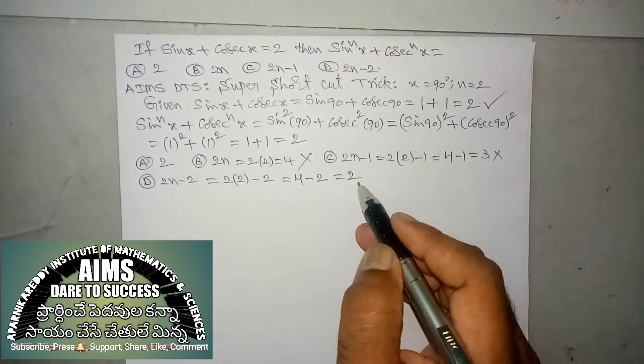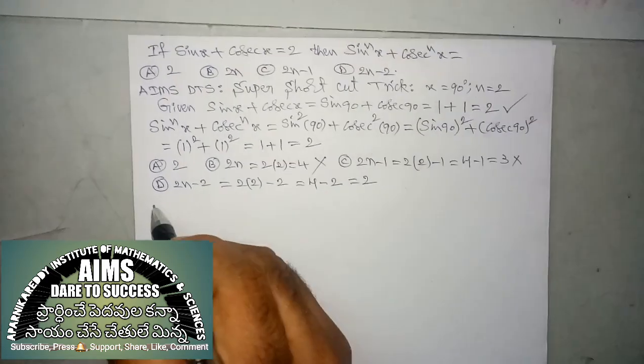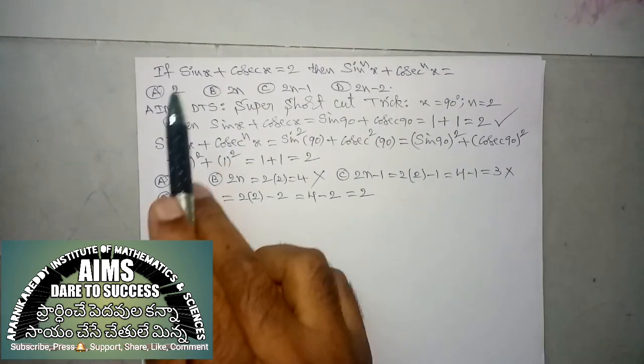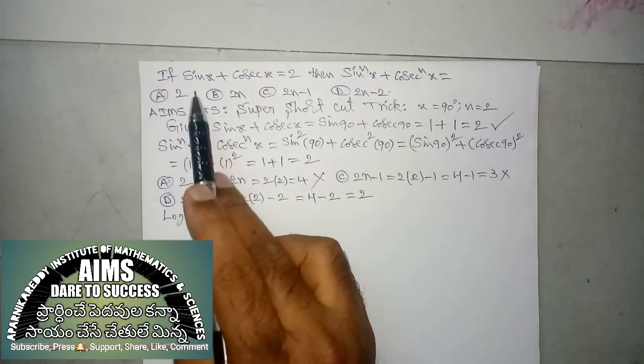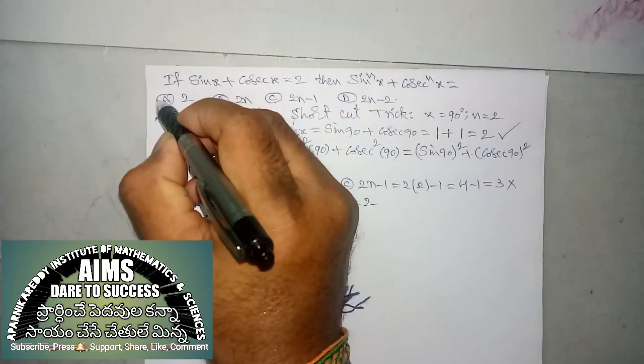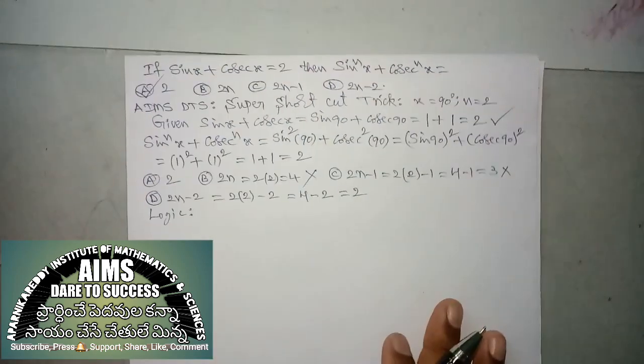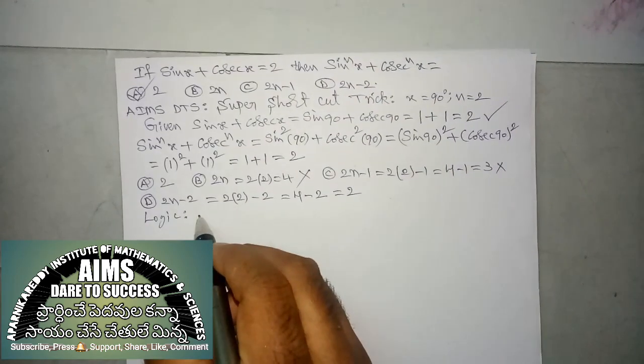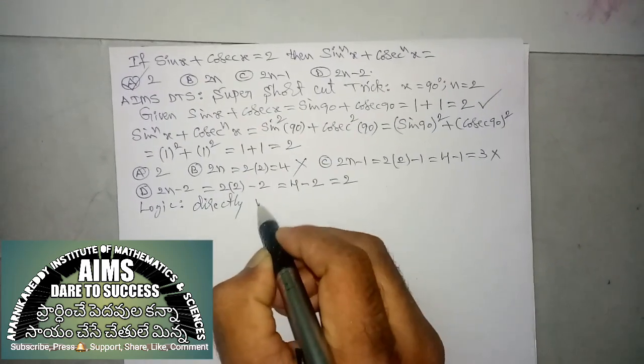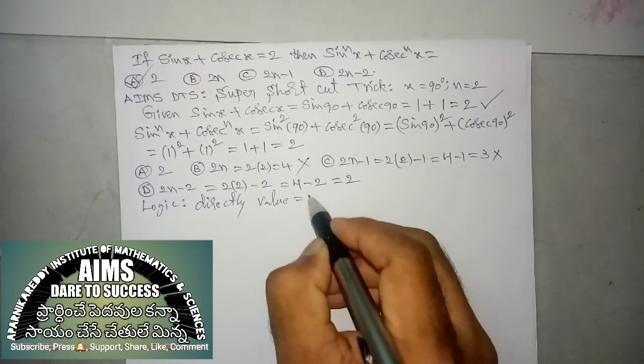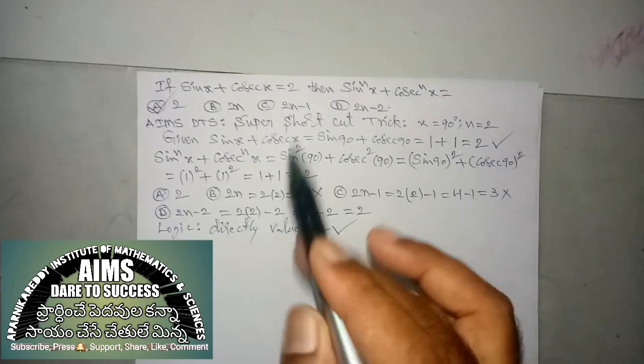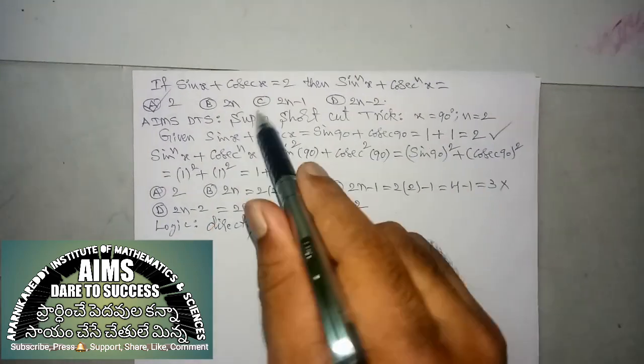So, we are going to take logic. Logic means here from the given 4 options, it is without n. So, you can take directly, this is the right option. Logic is directly, value is equal to 2. It is right option. I am taking only normal values. So, according to given option in the examination, you have to verify.